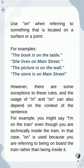Use 'on' when referring to something that is located on a surface or a point. For example: the book is on the table; she lives on Main Street; the picture is on the wall; the store is on Main Street.